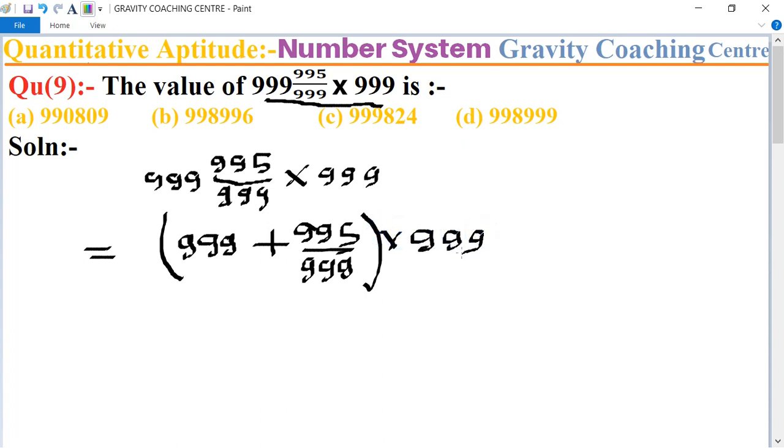Now we write 9999 equal to 1000 minus 1 plus 995 upon 999.